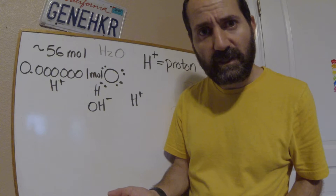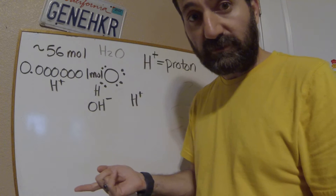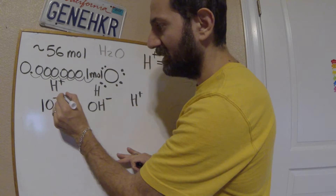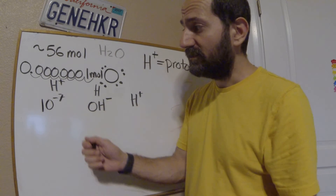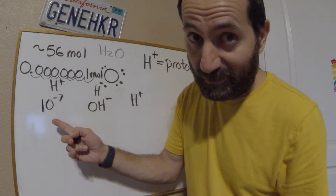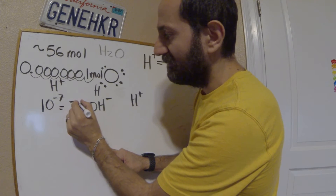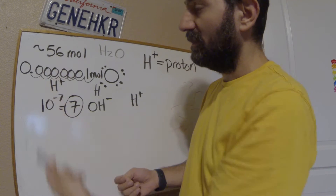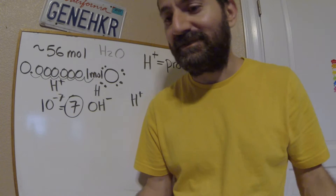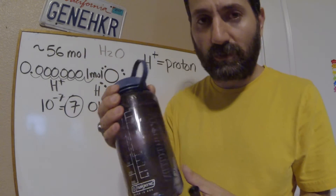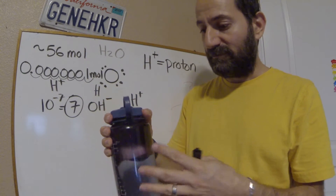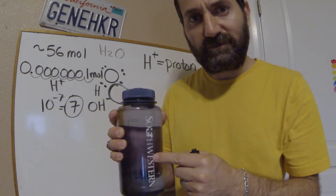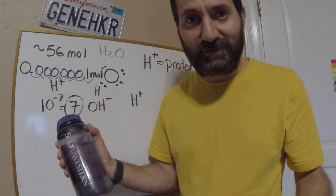Why does that mean pH 7? If you count the number of zeros before the one — one, two, three, four, five, six, seven — you see that's 10 to the minus 7. All pH is is the negative log of this number. The negative log of 10^-7 is 7. So pH 7 means there are 10^-7 moles of protons in a liter of water — that's what pH 7 means, and this is a reproducible fact of nature.